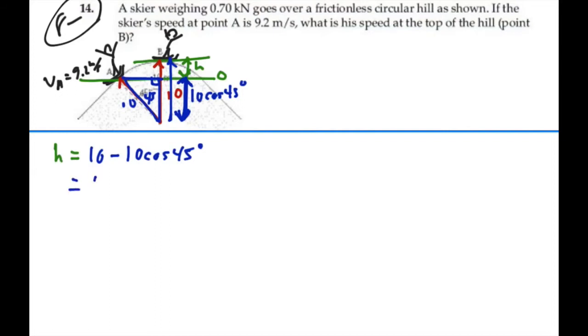So H is going to be equal to 10 minus 7.07 which will be 2.93 meters. So point B is 2.93 meters higher than point A.